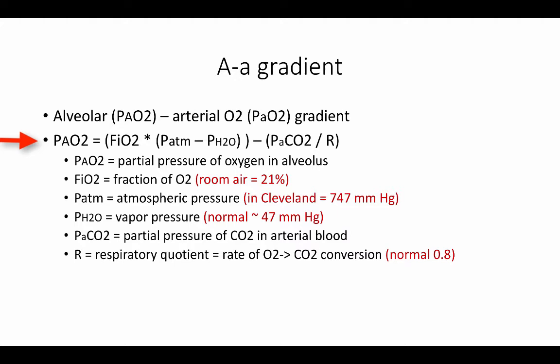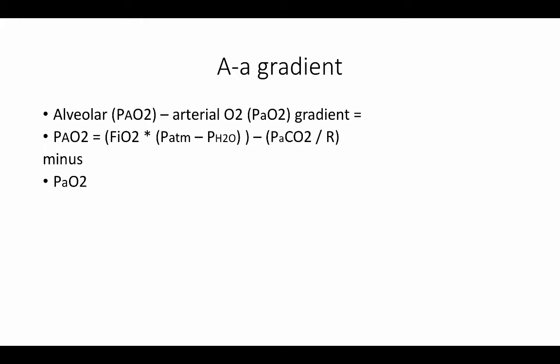The alveolar partial pressure of oxygen is determined by this equation, the FiO2 multiplied by the atmospheric pressure minus vapor pressure, and subtract from that the arterial CO2 level divided by the respiratory quotient. So the AA gradient is the alveolar partial pressure of oxygen, which you just calculated, minus the arterial partial pressure of oxygen.